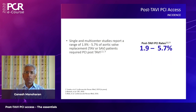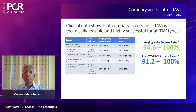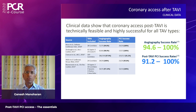The incidence of post-TAVI PCI is rated between 1.9 to 5.7 percent depending on the studies. Reassuringly, the success rate has been fairly high — ranging between 91 percent to 100 percent — and the variation could be due to operator experience and whether you've actively tried to engage coronary arteries even when you do not need to.